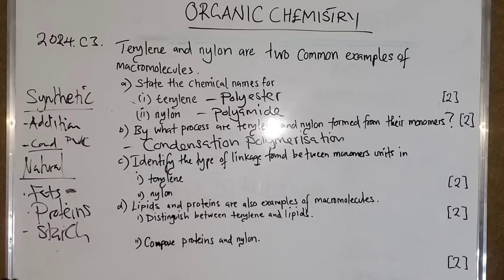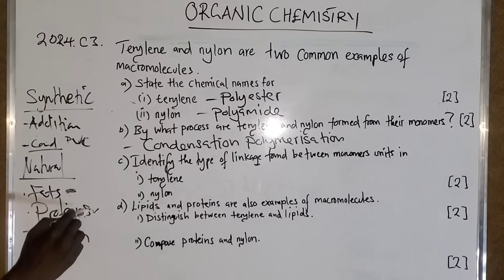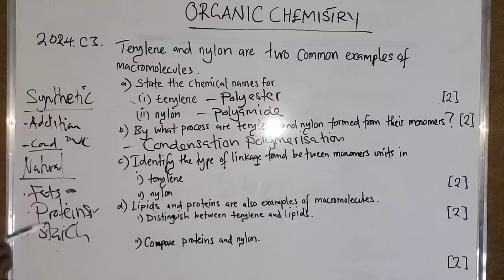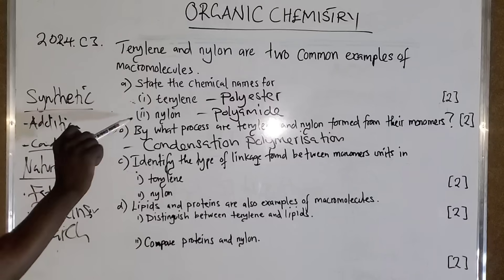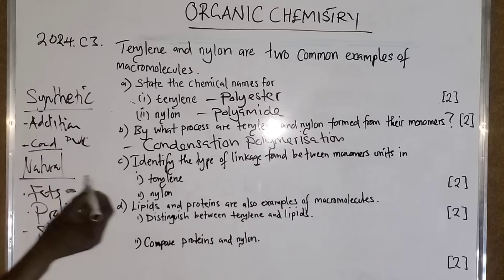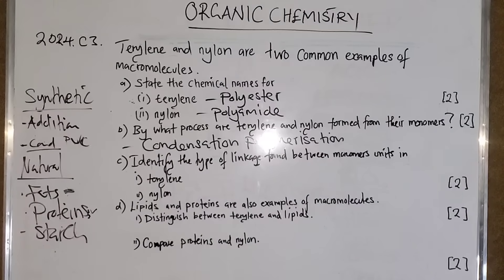Proteins have an amide linkage, so proteins are similar to nylon. The difference is that proteins are a natural polymer while nylon is a synthetic, man-made polymer. Now let's proceed to answering the question: identify the type of linkage found between monomer units in terylene.